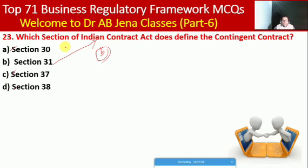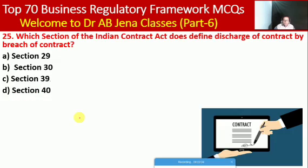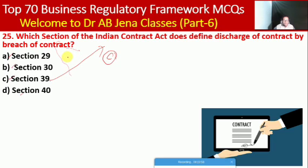Next MCQ: which section of the Indian Contract Act defines the conditions that an agreement must meet to be considered a valid contract? Whether Section 10, 15, 20, or 25. Here A is the right option — Section 10 of the Indian Contract Act is applicable for a valid contract. Next MCQ: which section of the Indian Contract Act defines discharge of contract by breach? Whether Section 29, 30, 39, or 40. Here C is the right option — Section 39 defines discharge of contract by breach of contract.